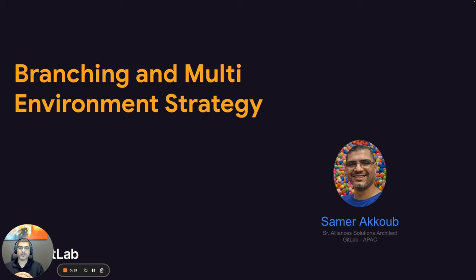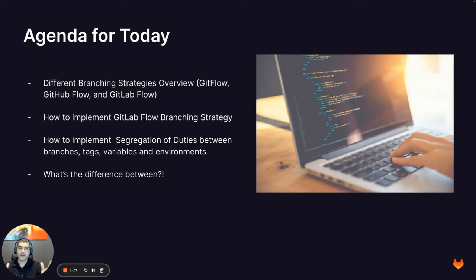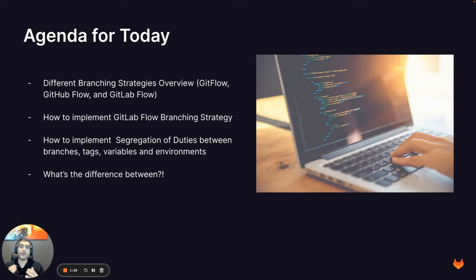We'll try to answer some of these questions in our session. My name is Samir Akub, I'm a Senior Alliances and Channel Solutions Architect with GitLab. In our agenda today we'll touch on these different points: first we'll discuss the different branching strategies and see what are the differences between them and when to use what. Second, we'll see how to properly implement GitLab Flow branching strategy. Third, we'll see how to implement segregation of duties between branches, tags, variables, and environments.